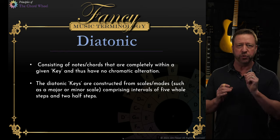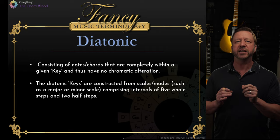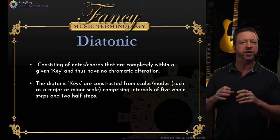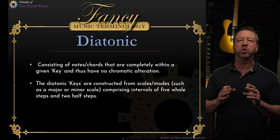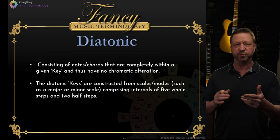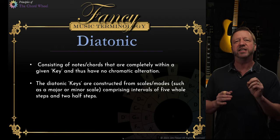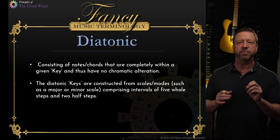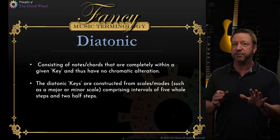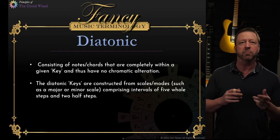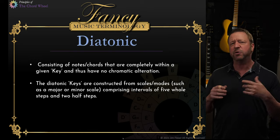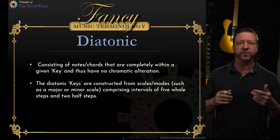So what diatonic means is twofold. The first is that it belongs completely within the key that you're discussing. So any note that you play or any chord that is composed of notes, every one of those notes is completely within the key. However, there's a more detailed explanation as well if you look at traditional music theory, and the idea of diatonic is it's based upon the seven notes of the scale, that is five whole steps and two half steps. It's what we would call major or minor, or in mode terms, Ionian and Aeolian. It would also cover Dorian, Phrygian, etc.